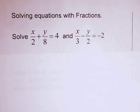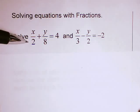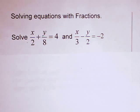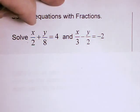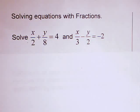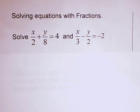Let's solve a system of equations that have fractions. Here I've got x over 2 plus y over 8 equals 4, and x over 3 minus y over 2 equals negative 2. I don't know about you, but I'm not crazy about fractions. So what I'd like to do is multiply through by a common denominator in each case to get rid of the fractions.